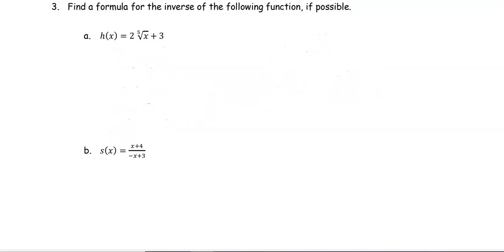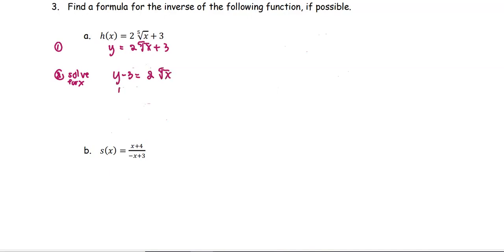For part a, the first step is to rewrite the function in terms of y. The next step, we are going to solve for x by isolating x by itself. Starting with subtracting 3 from both sides to get y minus 3 equals 2 times the fifth root of x. Then divide both sides by 2: y minus 3 divided by 2 equals the fifth root of x.